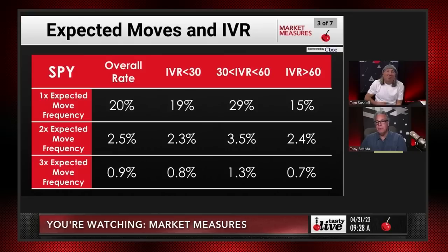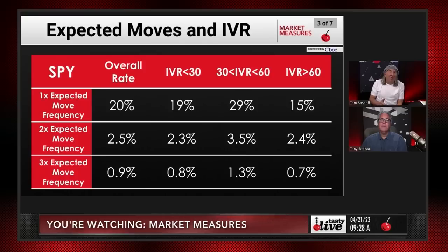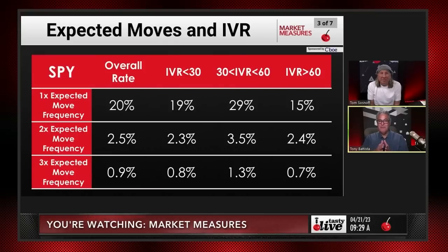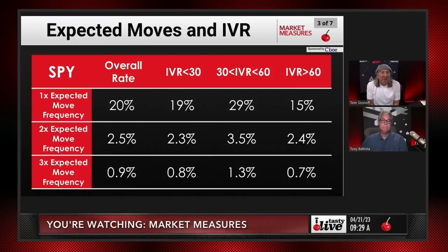When IVR is super high, the chance of having an outlier move is super low — that's the game we play. When IVR is super low, chances of an outlier move are also much lower than theoretical. But IVR trading between 30 and 60, which we think is the optimal range, also has the most risk. To get the biggest return you have to take the most risk — factor in the IVR of a strategy and try to put yourself in a winning position on entry.